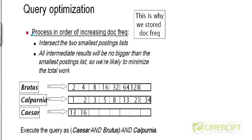So what we are going to do is, for queries like Brutus AND Calpurnia AND Caesar — for queries that are the AND of t terms — we are going to process the postings lists in order of increasing length. We are going to take the two smallest postings lists and intersect them first, then take the intermediate result and intersect it with the larger postings list. Because the intermediate results will be less than or equal to the length of the smallest postings list, we are likely — not guaranteed, but likely — to minimize the total amount of work if we follow this heuristic.